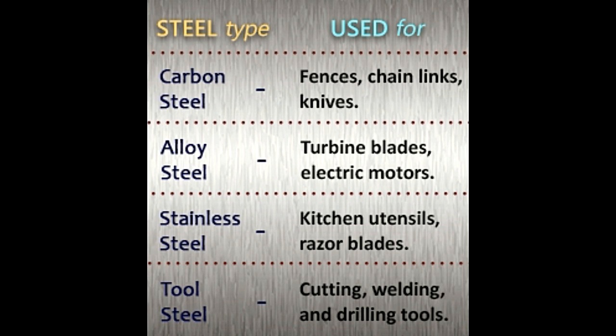Steel, an alloy of iron and carbon, is an extremely versatile material that is used for a variety of purposes. Alterations in the composition of the alloy and the addition of various other metals in specific quantities give rise to different kinds of steel with distinctive properties.